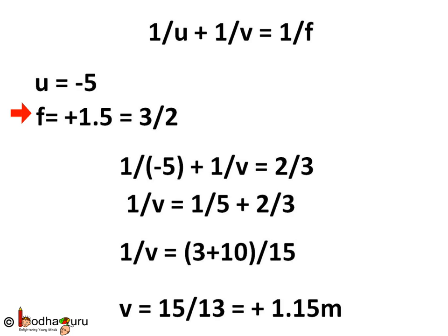1.5 can be written as 3/2 for easier calculations. So putting the values of u and f in 1/u + 1/v = 1/f, we get 1/(-5) + 1/v = 2/3. Taking 1/(-5) to the other side we get 1/v = 1/5 + 2/3. Taking the LCM of 15 we get 1/v = (3+10)/15 which is 13/15.